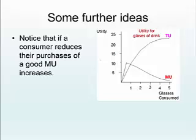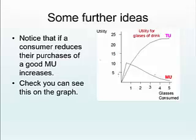As a consumer reduces their consumption, their MU increases. You can see this in the arrows moving up the MU curve to the left — the marginal utility is actually increasing. So by cutting back you actually increase your extra utility, although your total utility falls.